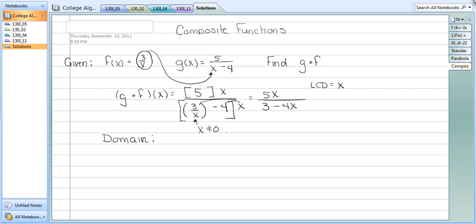So x can't be 0. Then we take a look at our final answer here, and that denominator cannot be 0. So we can set 3 minus 4x not equal to 0. Solve for x by adding 4x to both sides, and then dividing by 4.